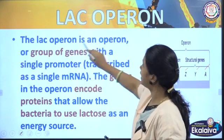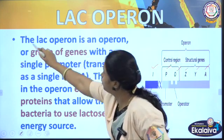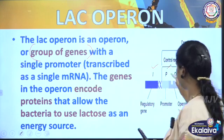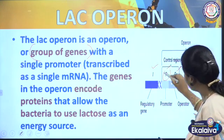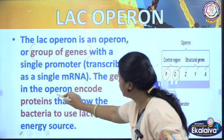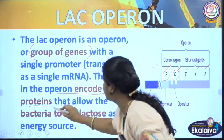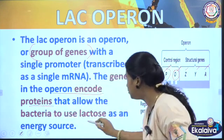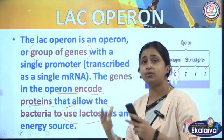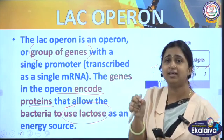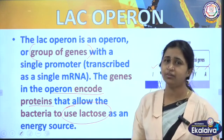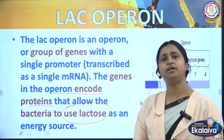The lac operon is an operon, or a group of genes with a single promoter. P is the promoter and O is the operator. The genes encoded in the operon encode proteins that allow the bacteria to use lactose. When lactose is present it will be in on mode; when there is no lactose — no inducer — it will be in off mode.